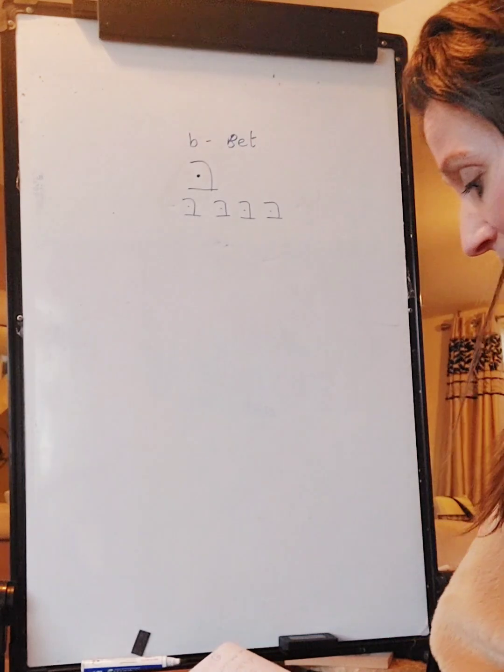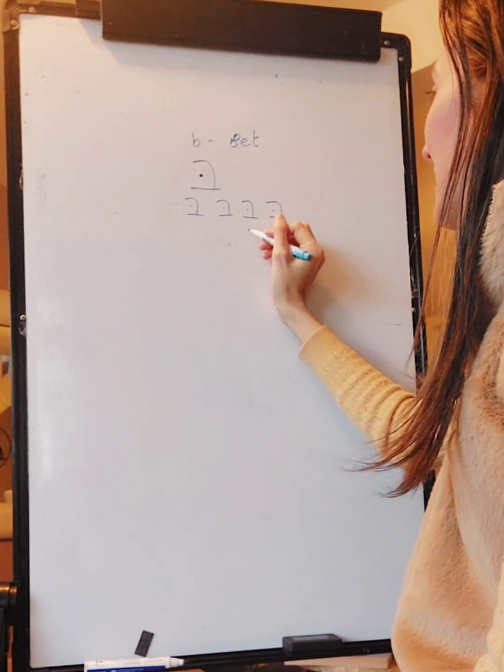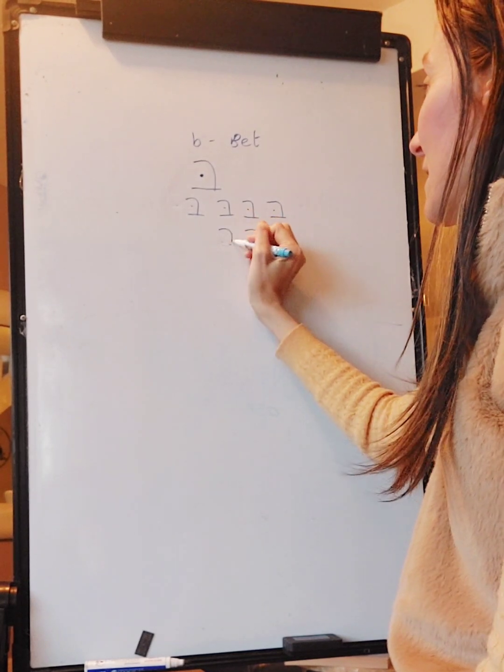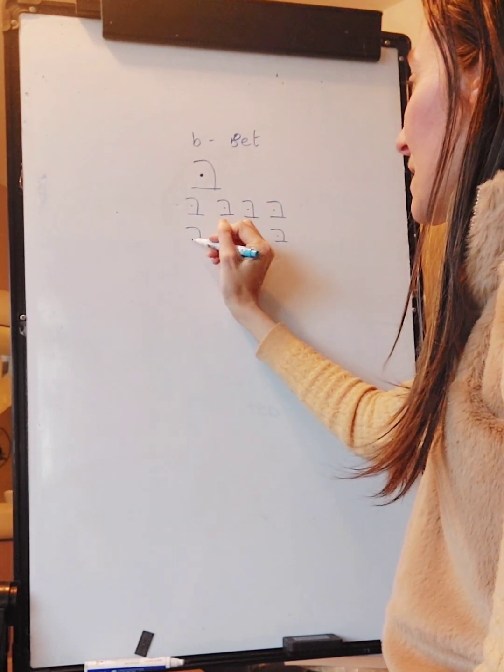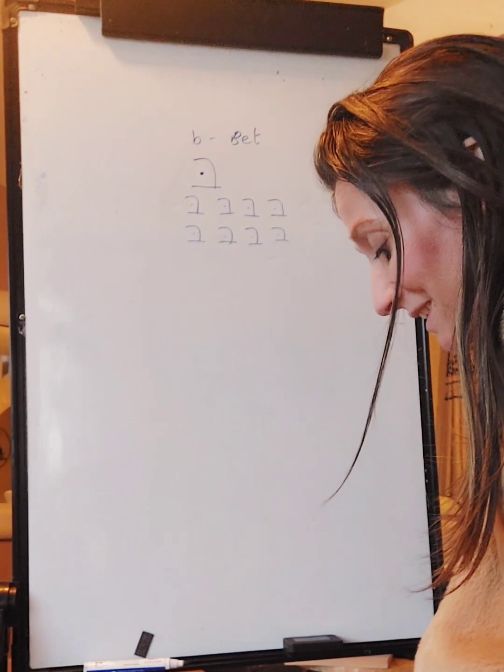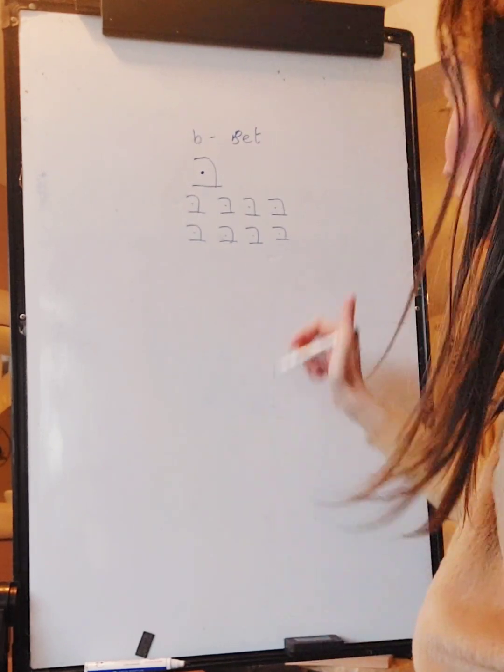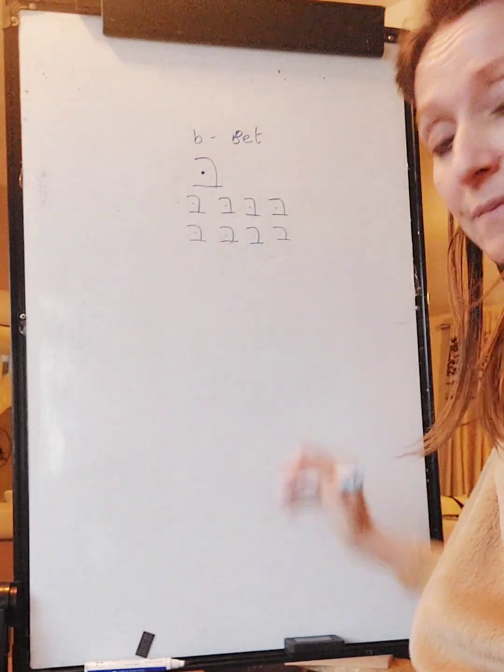And then I want you to write it again and say the name of the consonant. Bet is the second letter in the alphabet. The line on the bottom part of the letter is sticking out to the back.